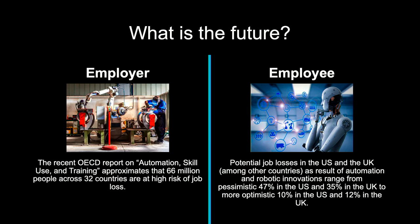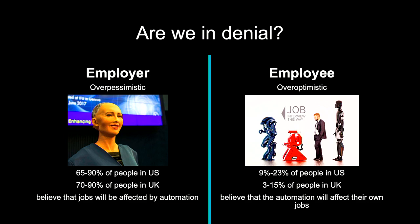This is where behavioral science comes in. When we ask people about their perceptions of risk to their own job, the results are very interesting. According to different studies, including studies done in my lab, the majority of people believe the job market will definitely be affected by artificial intelligence. But when we ask whether their own job will be affected, only between 9 and 23 percent in the US say it will, and between 3 and 15 percent in the UK. People think: yes, it will happen, but it's not going to happen to me.